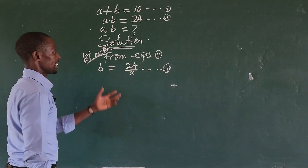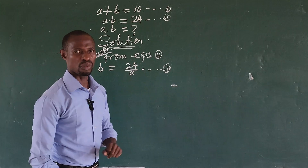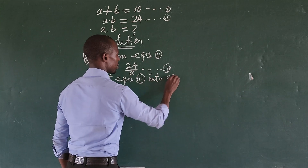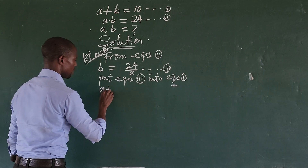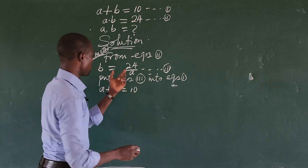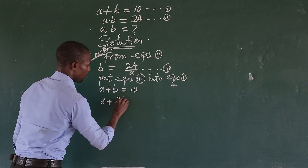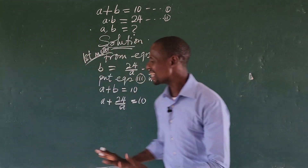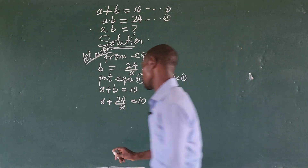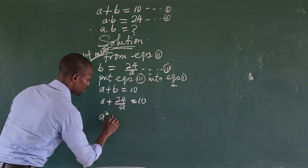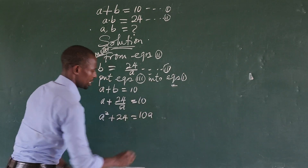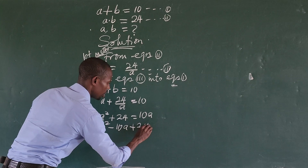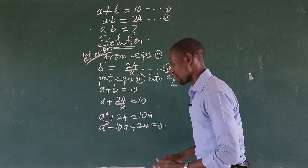What we do next is put equation three into equation one. Our equation one is: a plus b equals 10. Wherever we see b, we substitute this quantity. So we have a plus 24 all over a equals 10. We multiply through by a to clear the denominator, giving us a squared minus 10a plus 24 equals zero.